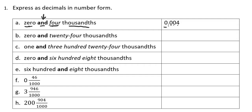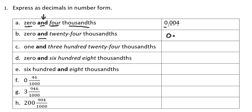For question B, I have zero and twenty-four thousandths. I know that I will have a zero in the ones place again. My decimal will go where the 'and' is. Now I have twenty-four thousandths, which means I need the number twenty-four to land in my thousandths place. So I'll put a zero in the tenths place, a two in the hundredths place, and a four in the thousandths place. That also shows me that two hundredths and four thousandths is the same thing as twenty-four thousandths. So this number is read as zero and twenty-four thousandths.